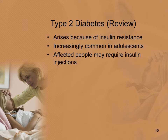Type 2 diabetes arises because of insulin resistance — the body can make insulin, but the insulin cannot do its job effectively. It is increasingly common in adolescents, especially those with poor eating habits. People with type 2 diabetes may require insulin injections, but can sometimes be managed with diet, exercise, and oral medication.